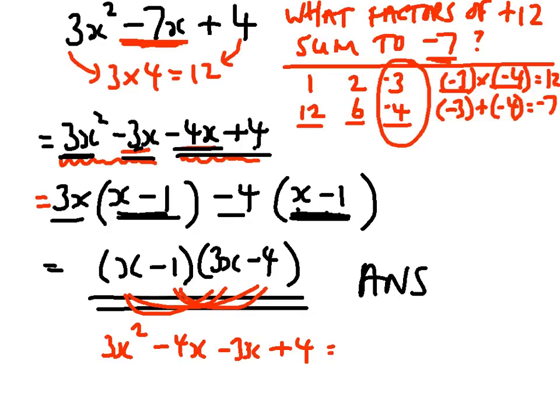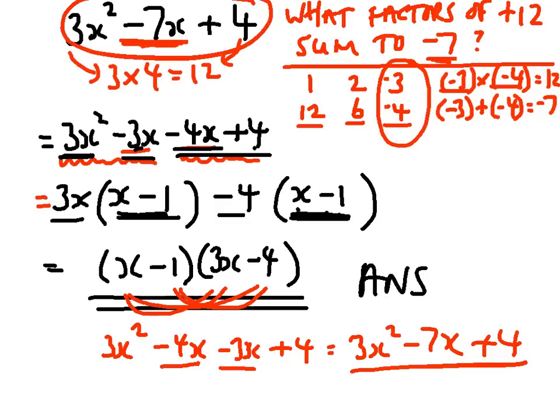So what I've got is 3x squared minus, well, minus 4x, take away another 3x is minus 7x plus 4. That is the thing that we're trying to factorize in the first place. So we know for sure that we've got the right answer. That's all right. Okay.